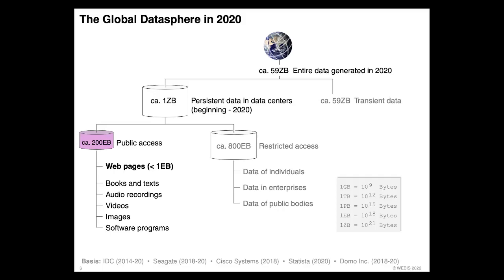The IDC made an estimation: 59 zettabytes in 2020 — that's a lot. To give you an idea of perspective: you're familiar with gigabytes and terabytes. A terabyte is a thousand times more than a gigabyte. A petabyte comes next — another thousand terabytes. Then exabytes, and multiplied by a thousand again we are at zettabytes. So it's an incomprehensibly large amount.